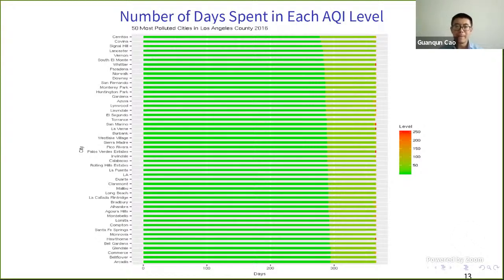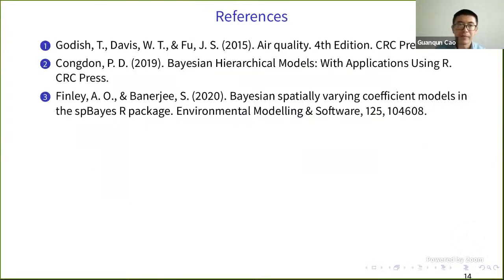The air in most cities is good, but all of them have fewer than 300 days of good air, and some have polluted days too. Here are the references — the first is an air quality textbook, and the second and third discuss the spatial Bayesian method we used.